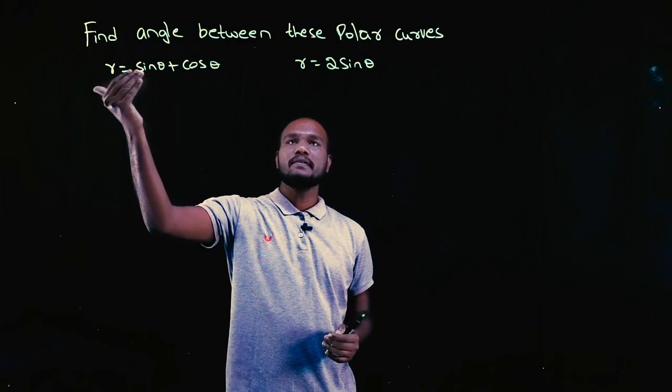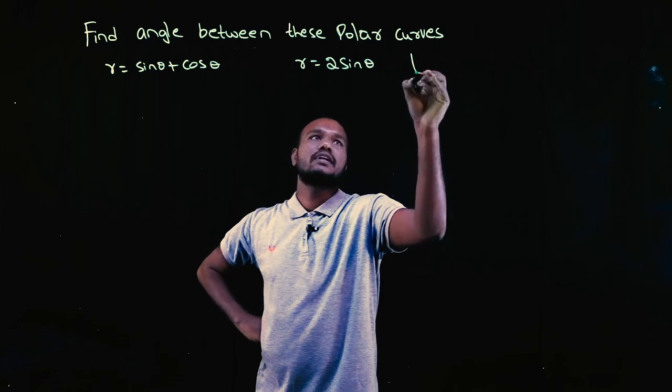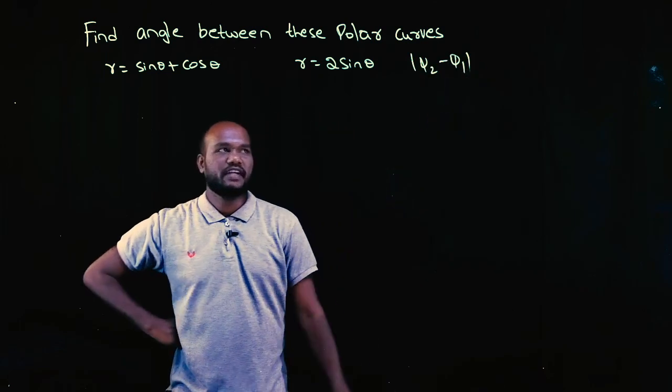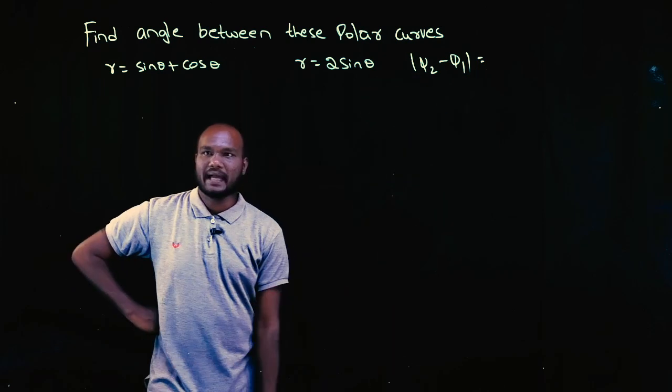Okay, what is the question asked? We have to find the angle between these two curves. What is the angle between two curves? Phi 2 minus phi 1. We have to find phi 2 and phi 1, then just take the difference between those two angles, right?